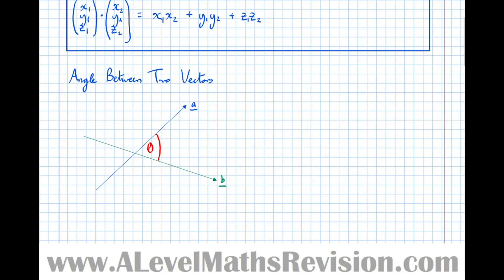So what I'm talking about is the angle between the two arrowheads. The formula that finds us the angle between two vectors uses the scalar or dot product. The formula is: A dot B equals the magnitude of A times the magnitude of B times cos theta. That's just a formula that you need to remember.